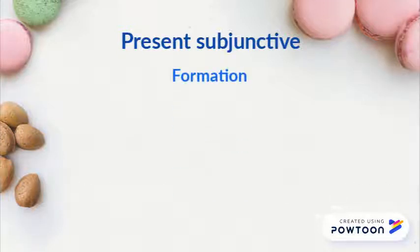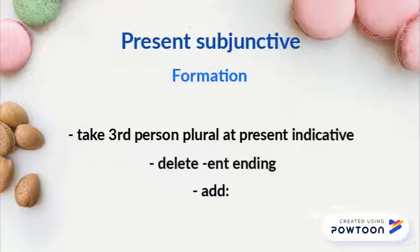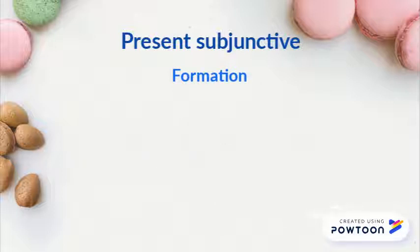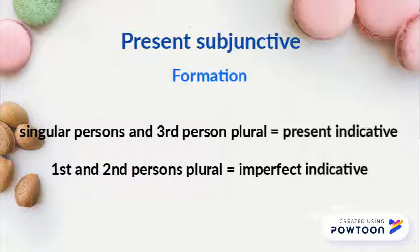To form the present subjunctive, take the third person plural form of the verb at the present indicative, delete the ENT ending, and add: E, ES, E, IONS, IEZ, ENT. In many cases, the singular persons and the third person plural are the same as the present indicative. The first and second persons plural are the same as the imperfect indicative.